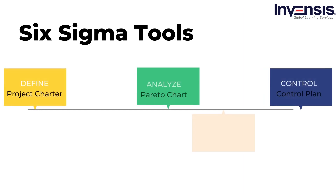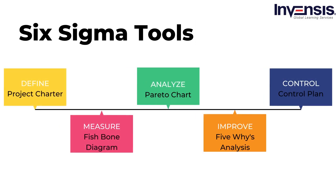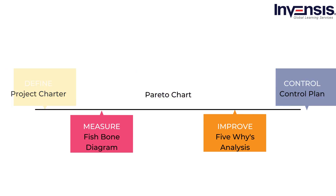There are many tools used in Six Sigma to maintain quality, but today we will discuss the tools used in the DMAIC methodology. These tools are categorized by phase: Define phase uses the project charter; Measure phase uses the fishbone diagram; Analyze phase uses the Pareto chart; Improve phase uses the five-why analysis; and the Control phase uses the control plan. Let us discuss them one by one.